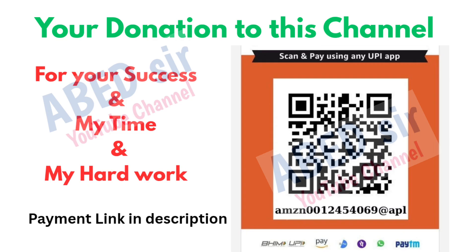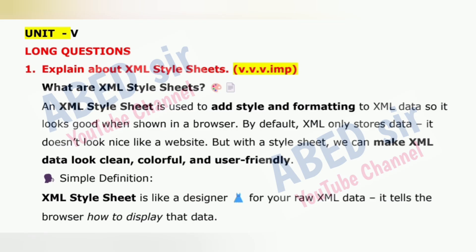Next, Unit 5 important long questions. First important long question: Explain about XML style sheets. An XML style sheet is used to add style and formatting to XML data so it looks good when shown in a browser. By default, XML only stores data and doesn't look nice like a website. But with a style sheet, we can make XML data look clean, colorful and user-friendly. XML style sheet is like a designer for your raw XML data — it tells the browser how to display that data.